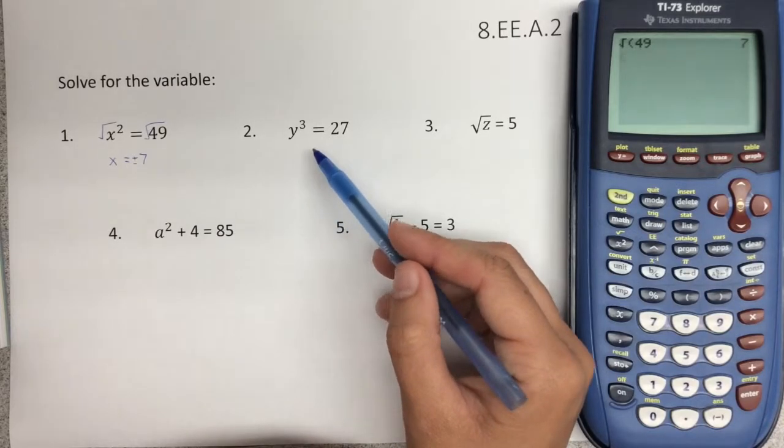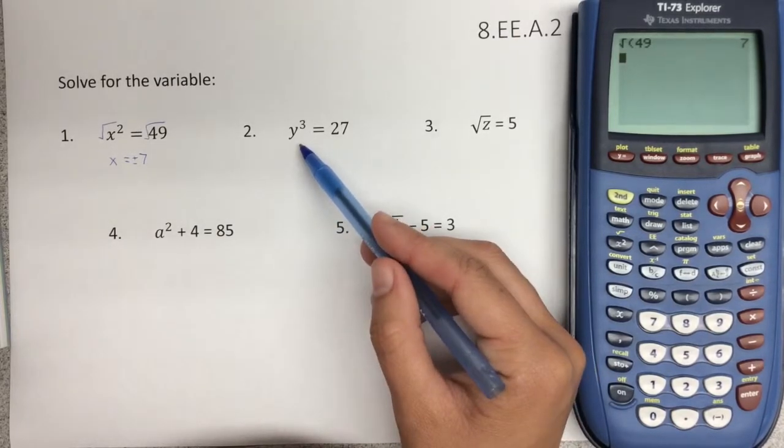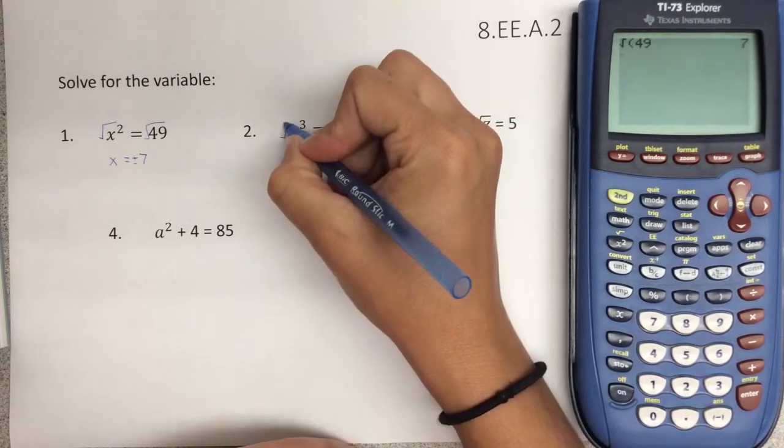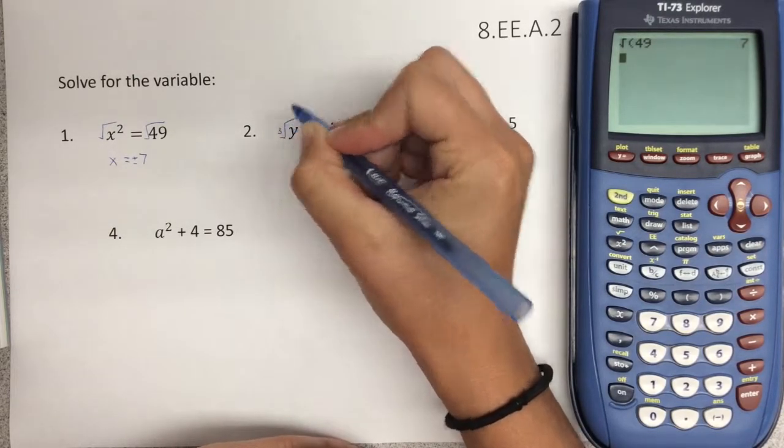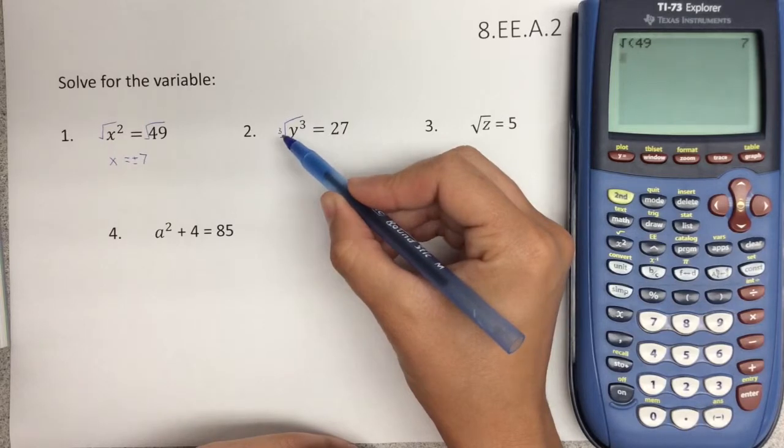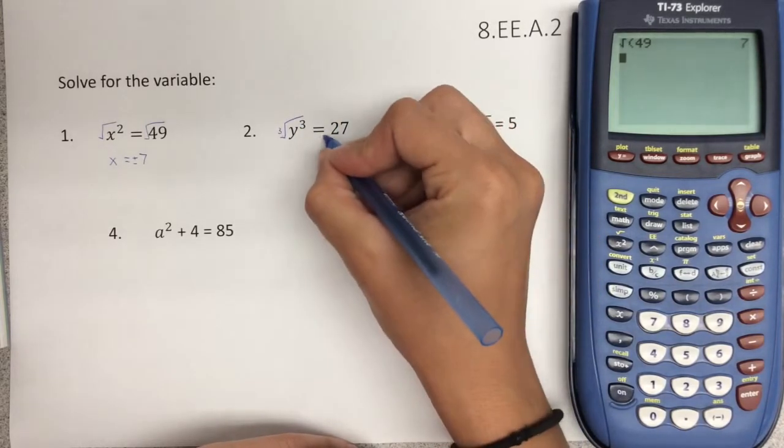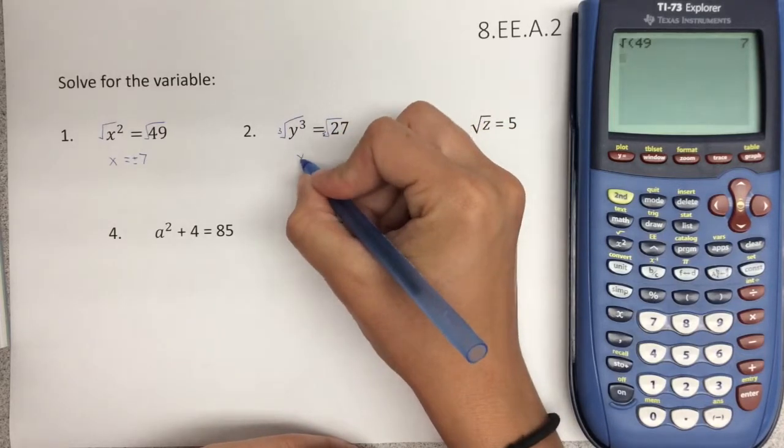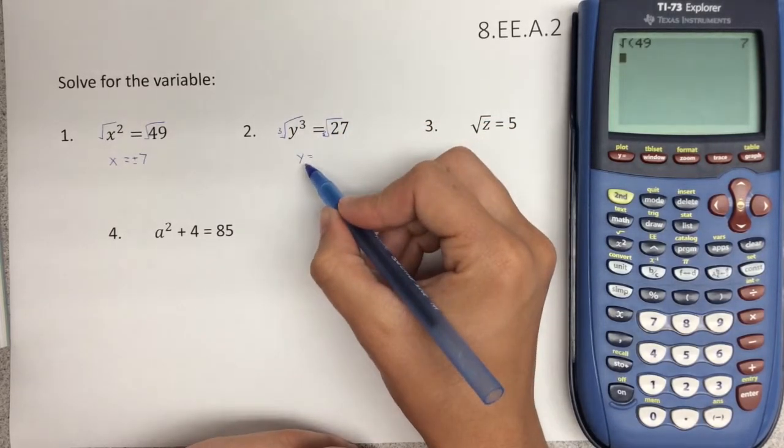For number two, we have y cubed equals 27. To get y isolated, we need to get rid of our cube here. So the opposite of a cube is a cube root. It looks just like the square root, except it has a little 3 above the little check mark there. We're going to take the cube root of both sides. So the cube root over here will leave us y, which is what we were wanting. We wanted y isolated.